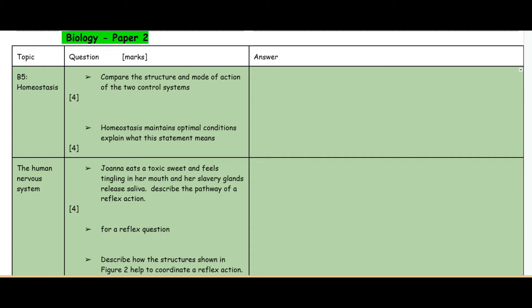The way this video is going to work is you're going to have questions on the left hand side and answers on the right hand side. The first question: compare the structure and mode of action of the two control systems. This is four marks. The two control systems are the nervous system and the endocrine system.